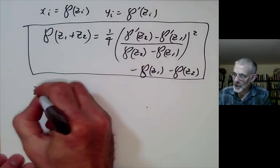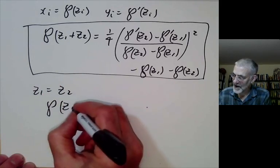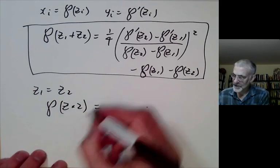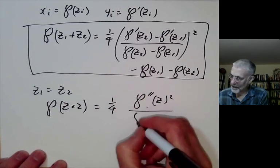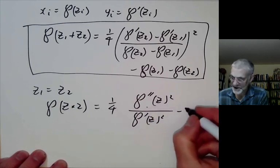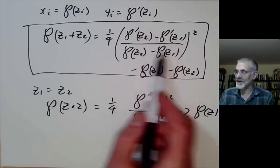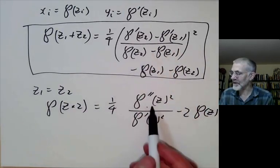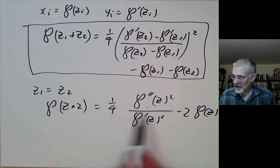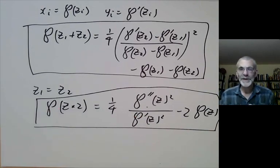We can also put z1=z2 to get the duplication formula. When z1=z2, numerator and denominator both vanish, so we apply L'Hôpital's rule and take another derivative of P. This gives P(2z) = (1/4)·(P''(z))²/(P'(z))² - 2P(z). This is the analogue of the duplication formula for sine and cosine.